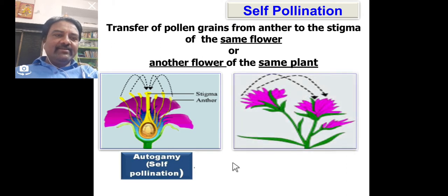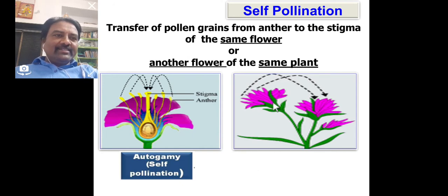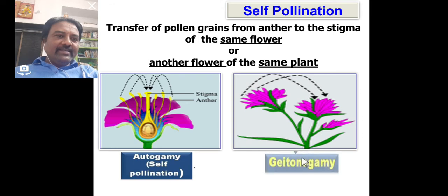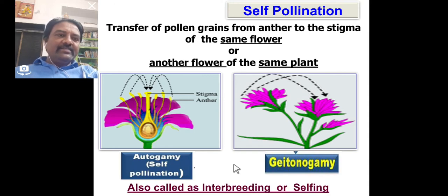The second scene: two flowers are seen, and pollination occurs between them — transfer of pollen grain from one flower's anther to another flower's stigma. But here, clearly seen on the same plant body, this self-pollination is called geitonogamy type of self-pollination. Self-pollination is also called inbreeding or selfing.